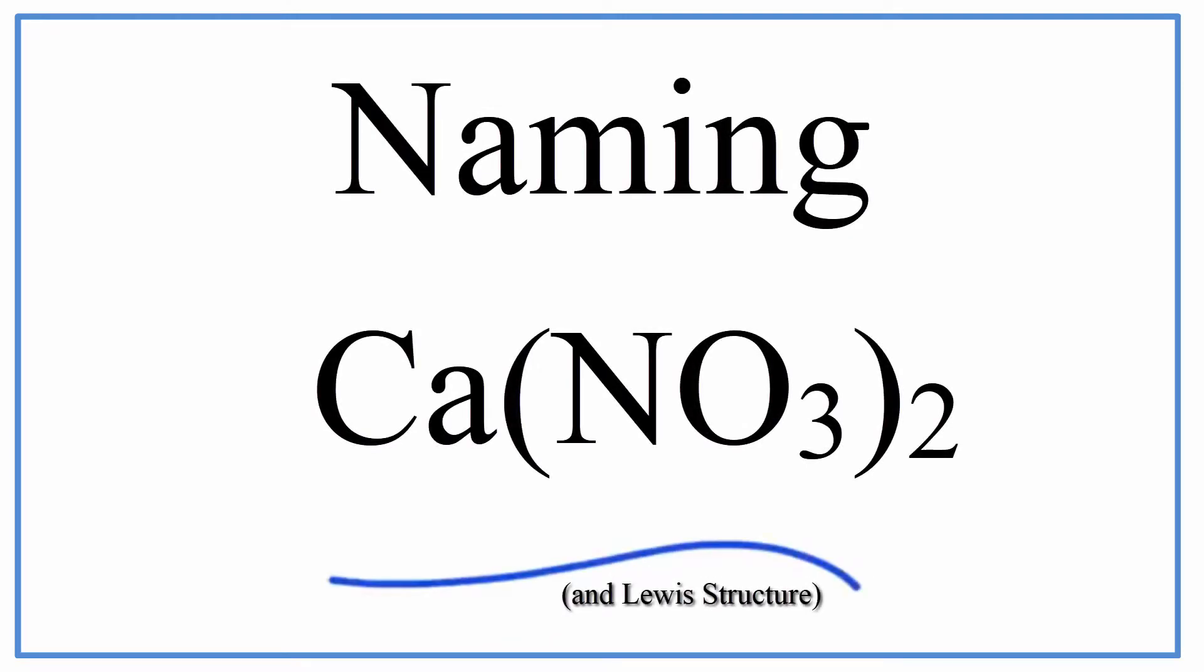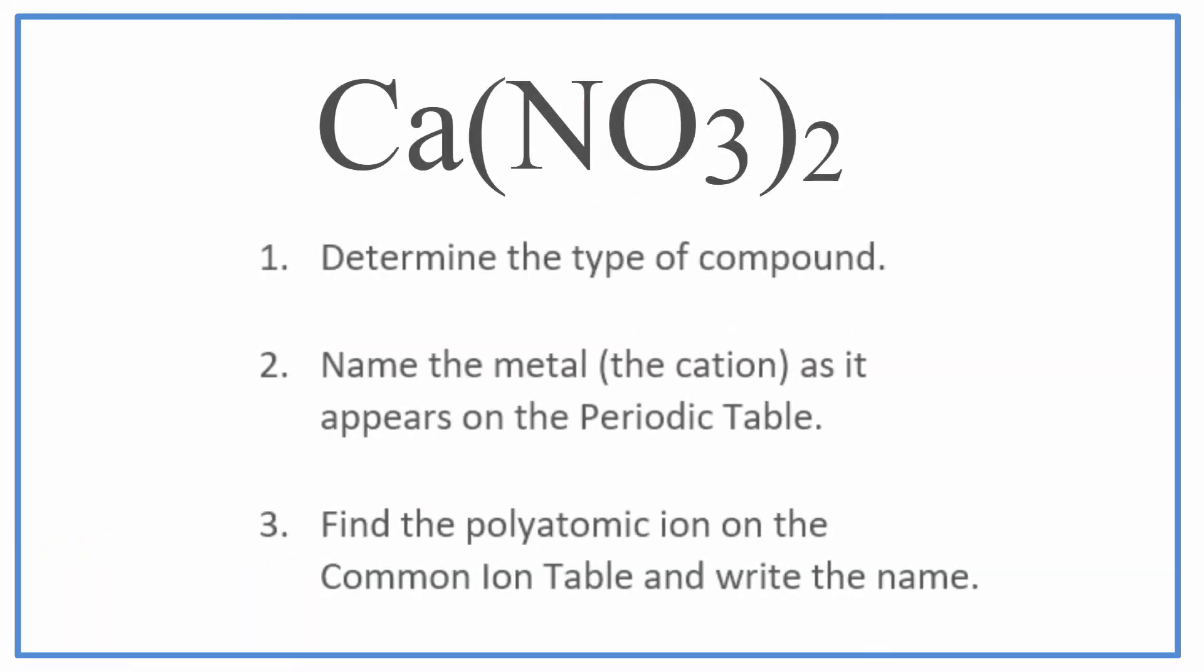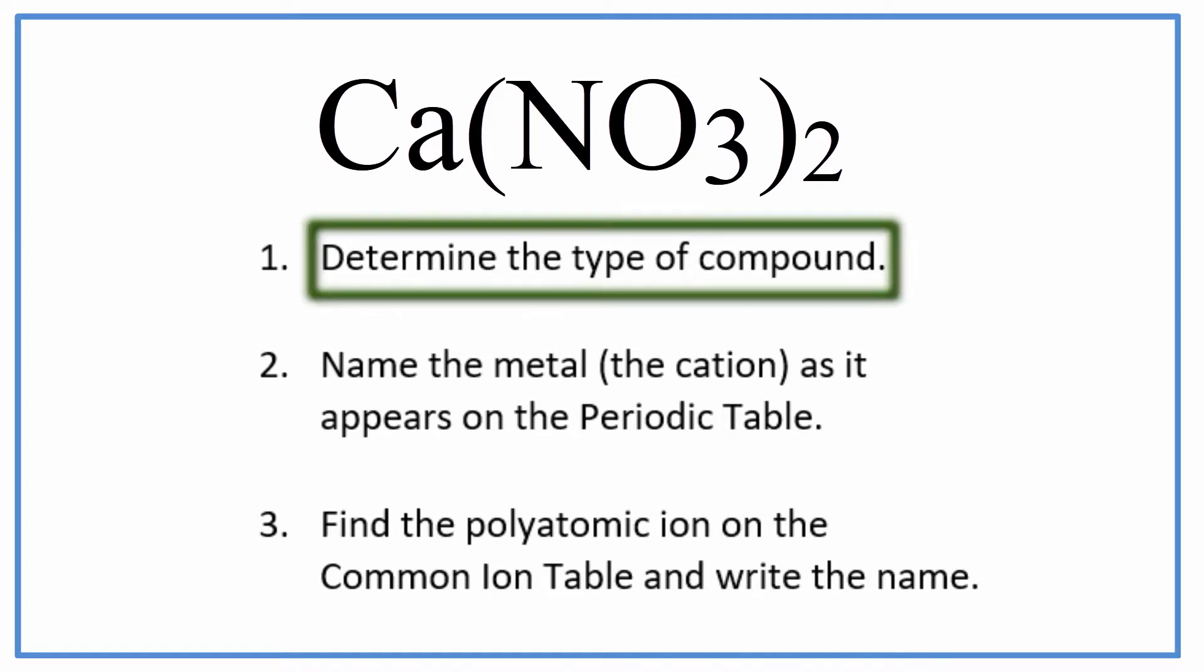This is Dr. B, and in this video, we'll write the name for the ternary ionic compound Ca(NO3)2. We'll follow these steps to make sure we get the correct name. First, we have to make sure we know what type of compound we have.